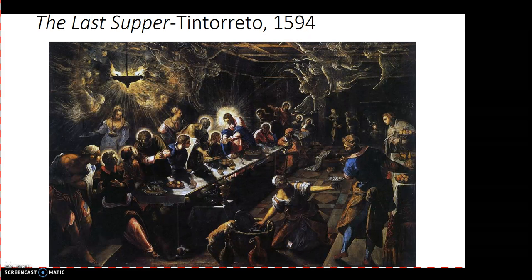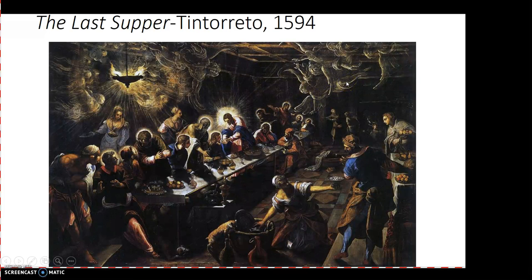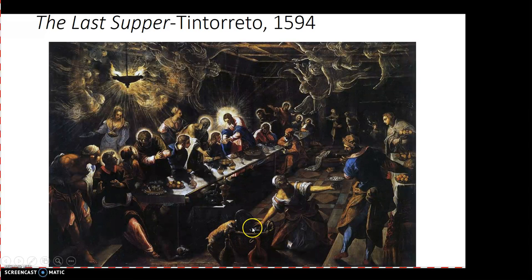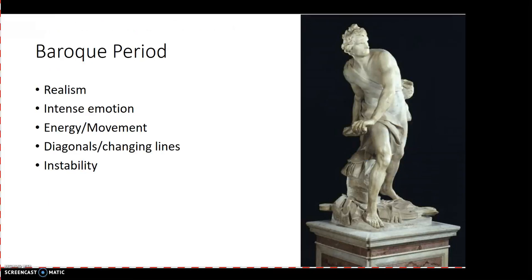Another example of Mannerism is the Last Supper by Tintoretto. Here we get really stylized imagery — you have angels representing heaven coming down to Jesus at the Last Supper, a completely different look than Leonardo da Vinci's version. Certain people are given a halo around them to signify their holiness, while you also have regular people — look at the servers on the side. There's a sense of realism: you have a cat or dog putting its head into a basket trying to lick the plate clean, much more reflective of actual life.